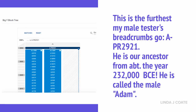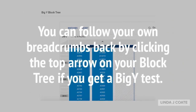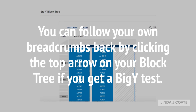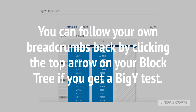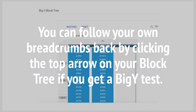You can follow your own breadcrumbs back by clicking the top arrow on your Block Tree if you get a Big Y test. You'll learn all about famous people that you're related to way back in history that have come off the same branches as you. I find their reports fascinating.